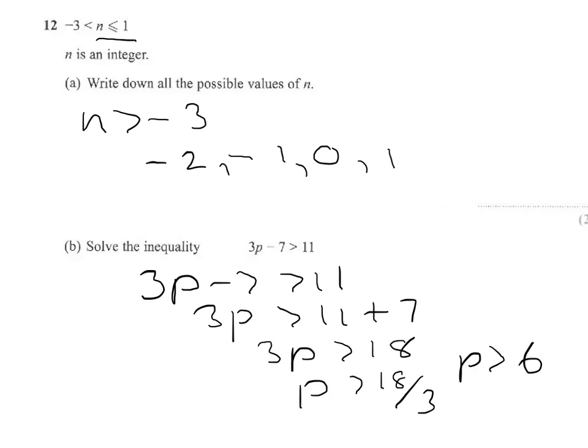And you can check that. You can take a value that's larger than 6, like 7, and see if it works. So if I did 3 times 7 minus 7, would my answer be greater than 11? Well, 3 sevens are 21, and 21 take away 7 is 14. And that satisfies the inequality, showing you that the value you've taken is correct.